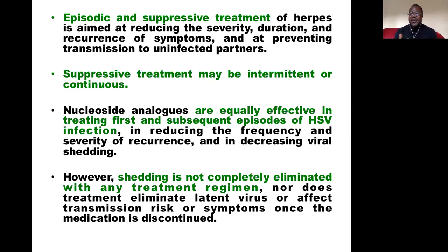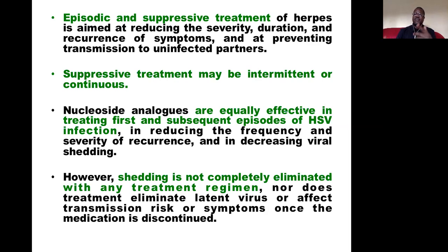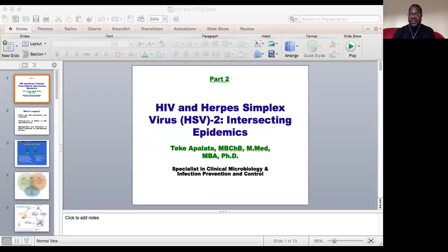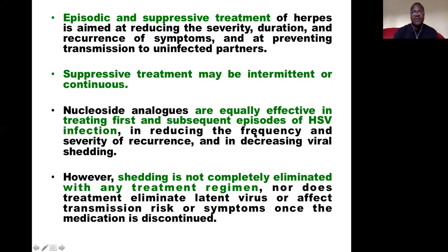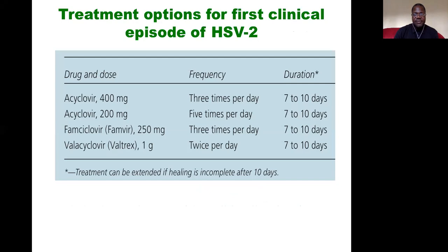Suppressive treatment can be intermittent or continuous. You can give it for a period, stop, allow an interval free of treatment, then reintroduce it — so it can be intermittent — or it can be continuous, depending on the clinical presentation of the patient. These are the treatment options for first-line episodic treatment.